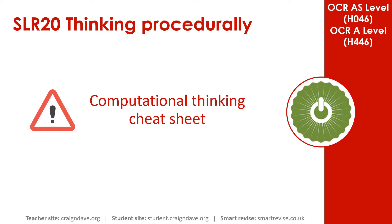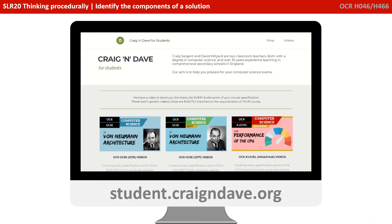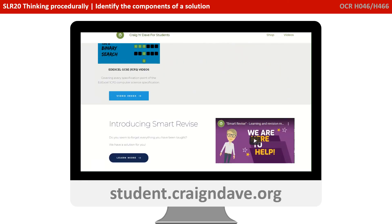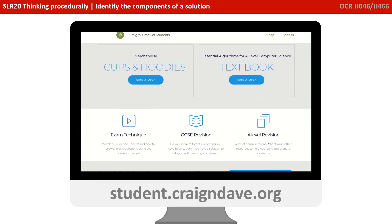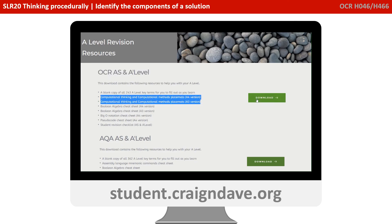To help get your head around everything to do with computational thinking, we have a freely available downloadable cheat sheet. It has two sides: a basic poster reminding you at a top level what the five different strands are, and on the back a much more detailed explanation. This resource is completely free from student.craiganddave.org — just scroll down, select the A Level Revision section, then find the OCR AS and A Level area and click download to get the zip file.